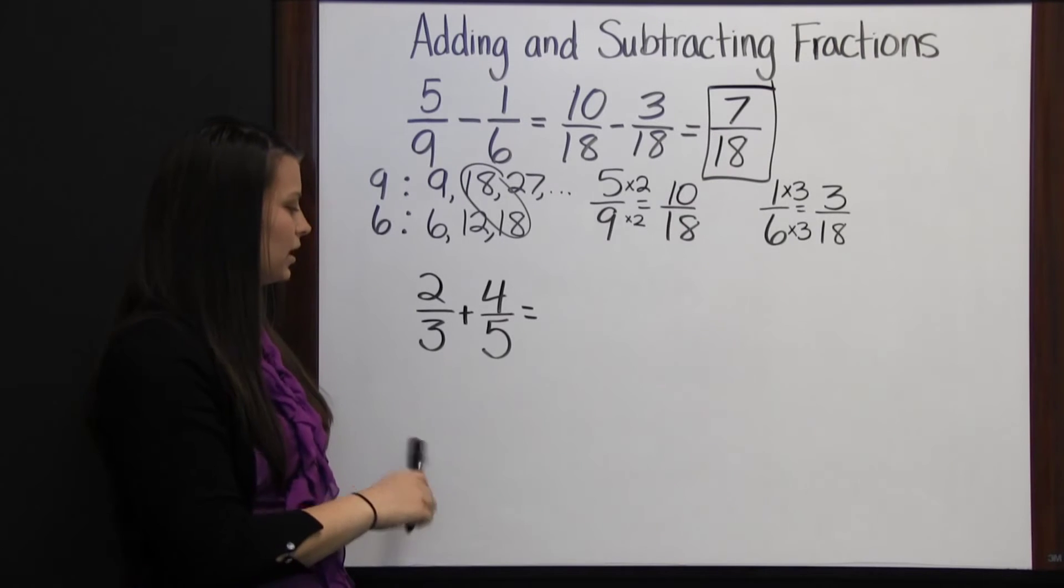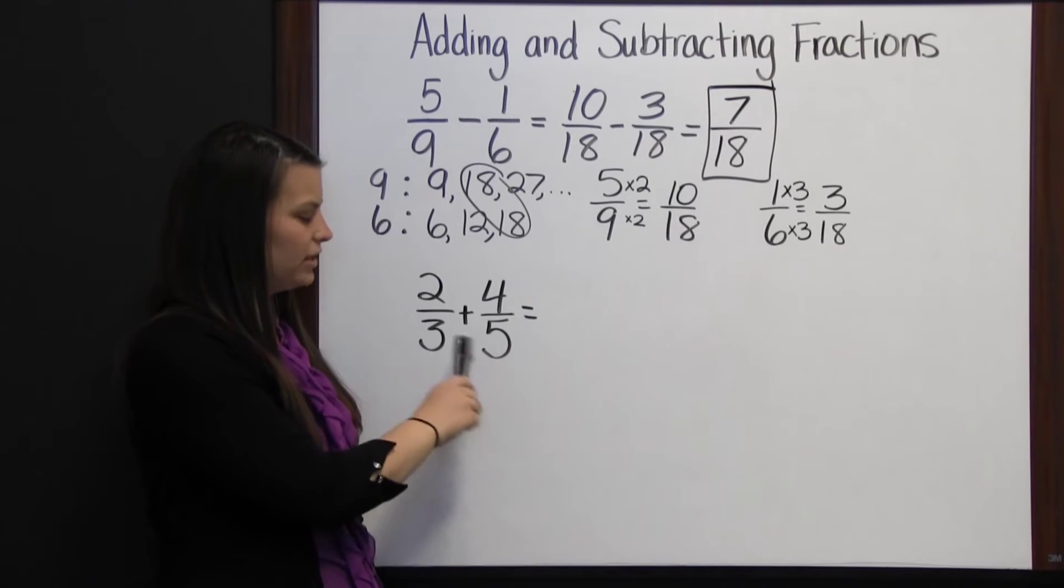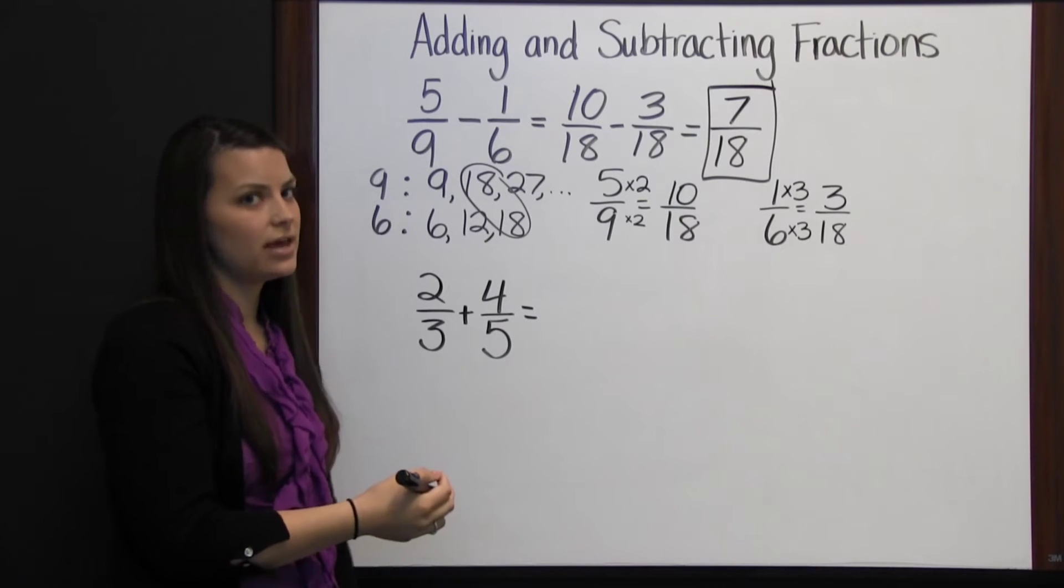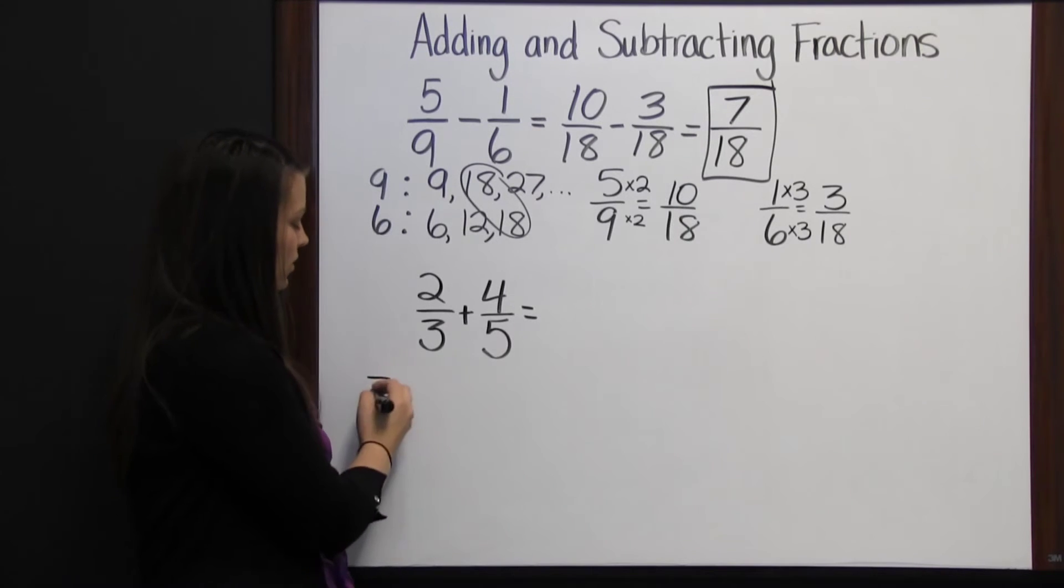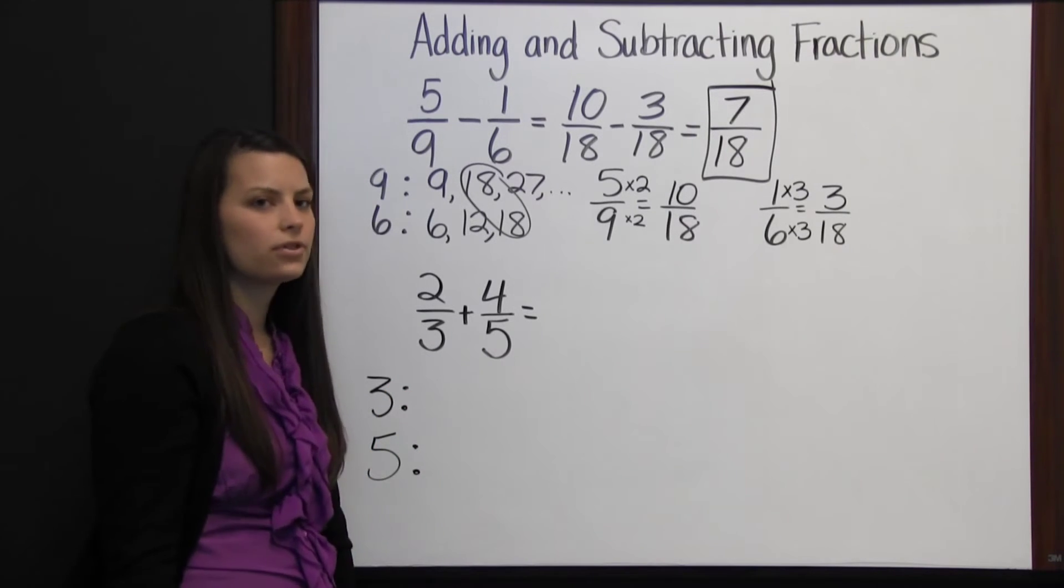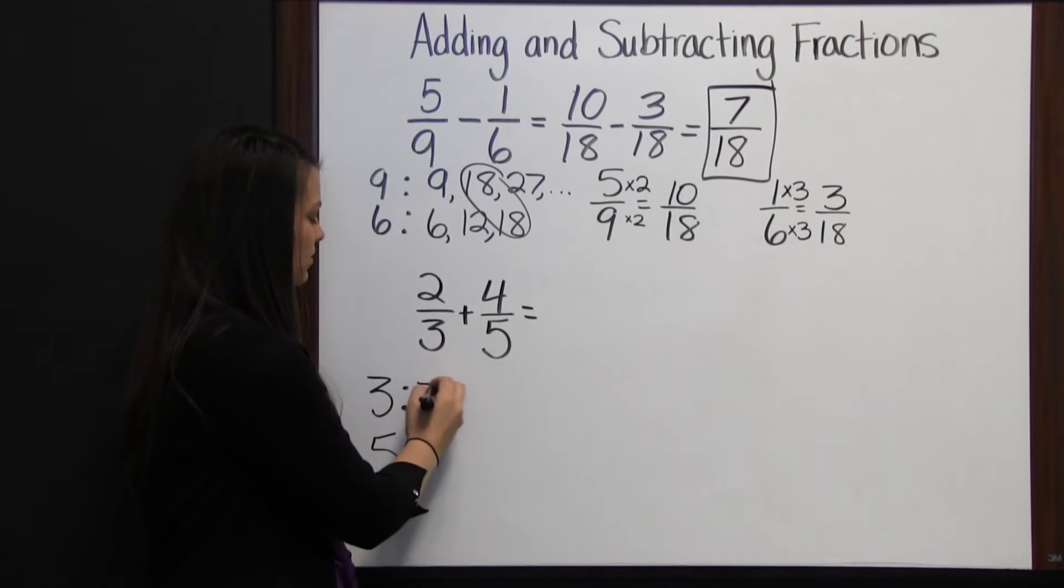Let's look at an addition problem. Again, we've got to see if our denominators are the same, and if they aren't, then we need to change them so that they are. So we're going to find the least common denominator for three and five, which means we're finding the least common multiple for three and five. So I'll list the multiples.